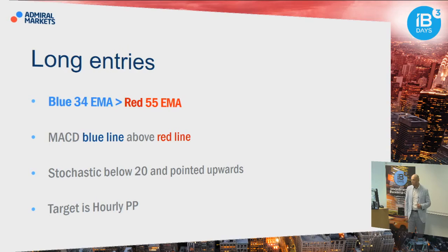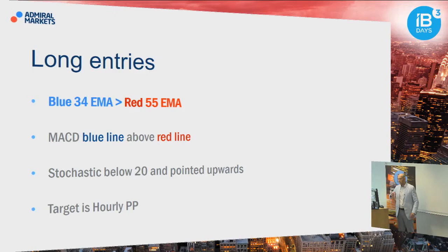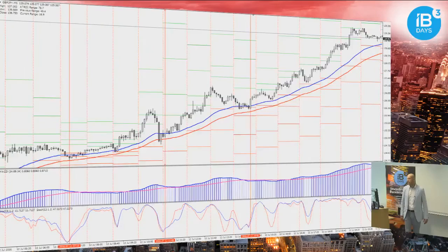Long entries are made when the blue EMA is higher than the red EMA, MACD blue line is above the red line, stochastic is below 20 and pointed upward, and target is the hourly pivot point. I'll leave you a couple of seconds to take a snapshot of this screen so you can see the rules.